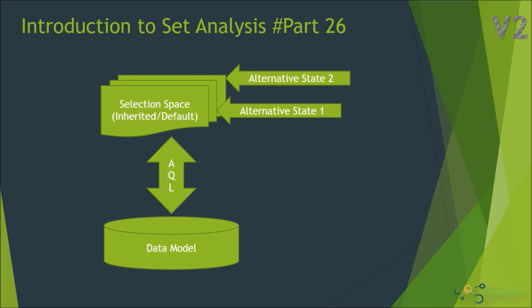To avoid this scenario, QlikView has introduced the alternative states concept. By default, QlikView provides one selection space, also called the inherited selection space. Developers have the leverage to create more than one selection space using the alternative states concept. Alternative states are nothing but additional selection spaces created on top of the existing selection space.